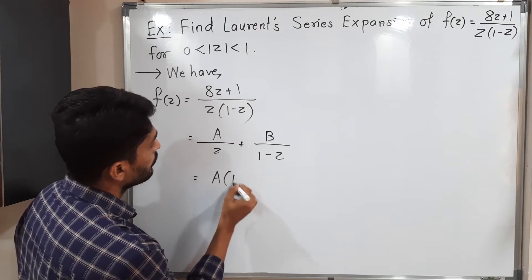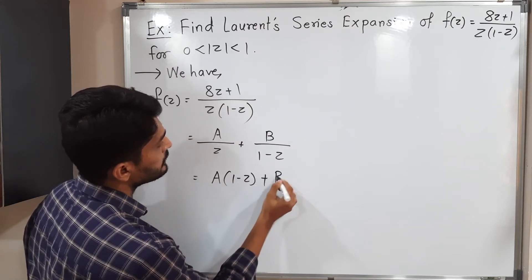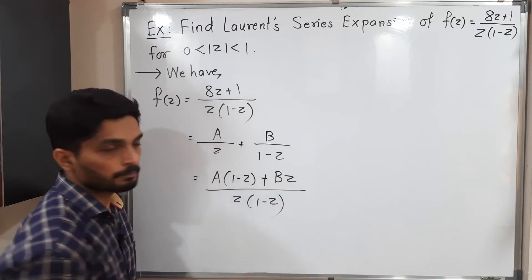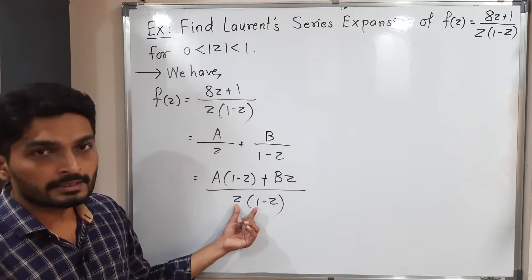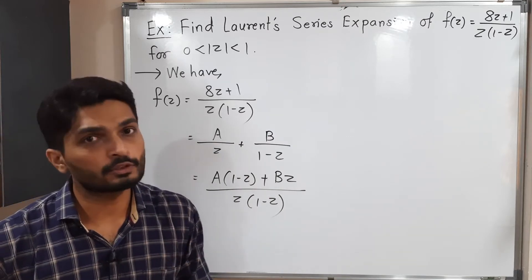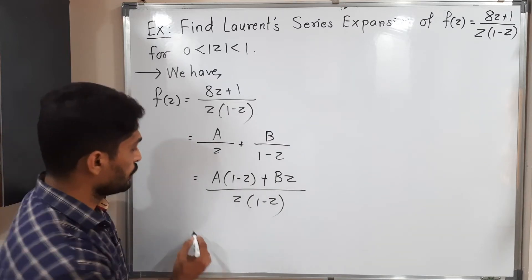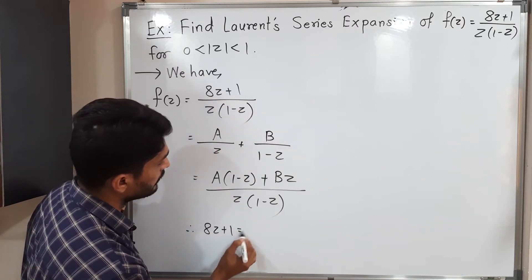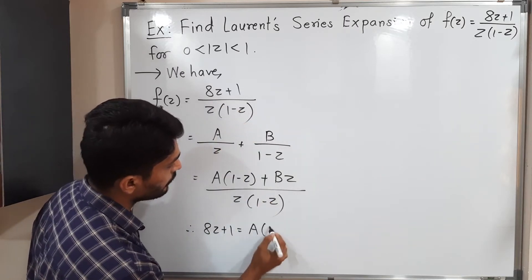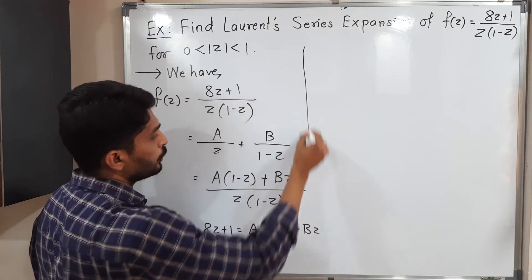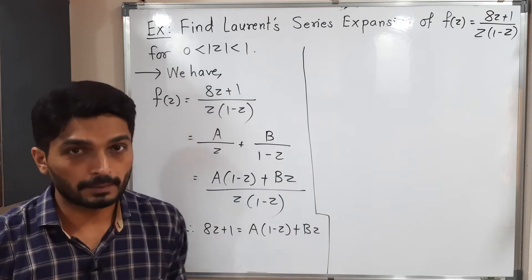Let us see what will happen. A(1 minus z) plus Bz divided by z(1 minus z). As you can see here this denominator and this denominator are same. So you can cancel and simply compare numerators. Therefore if you compare numerators, 8z plus 1 equals A(1 minus z) plus Bz. As I told you earlier, our target is to find the values of A and B.